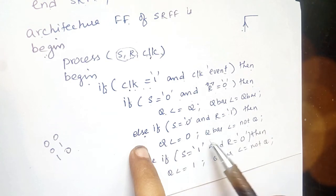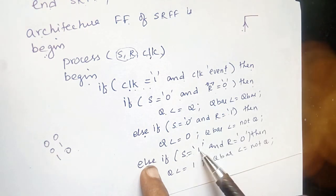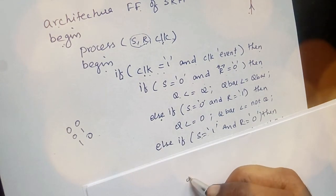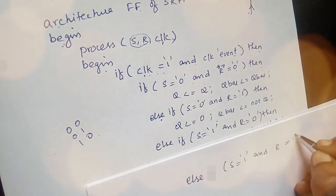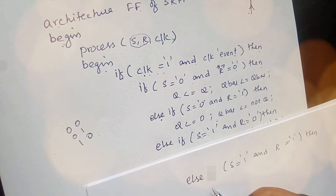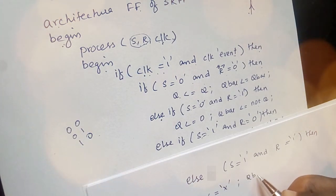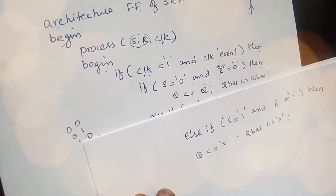Else, if S equals 1 and R equals 0, then Q equals 1 and Q bar equals not Q. Then the last condition: if S equals 1 and R equals 1, then Q is invalid and Q bar is also invalid, meaning this is an undefined state.